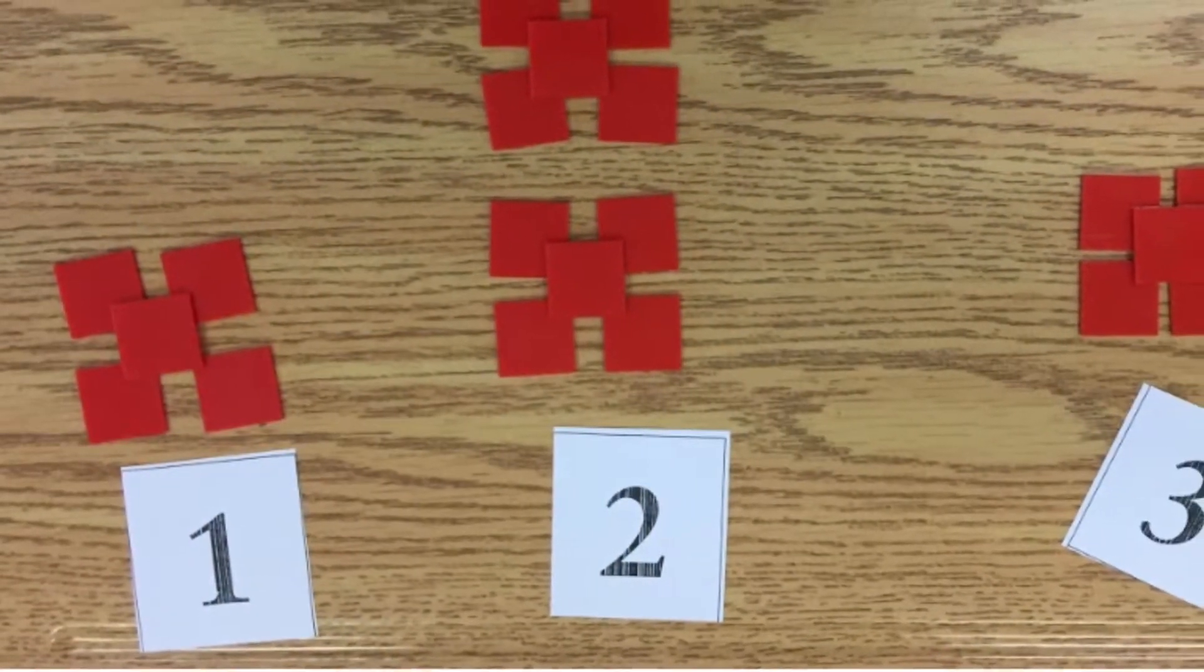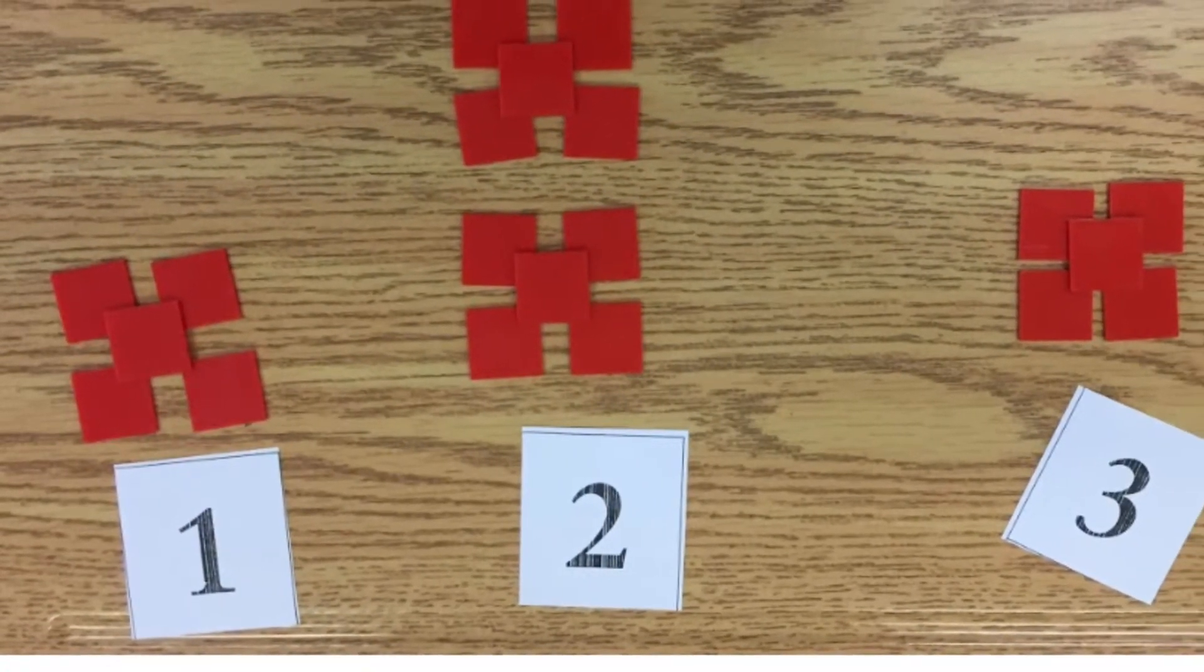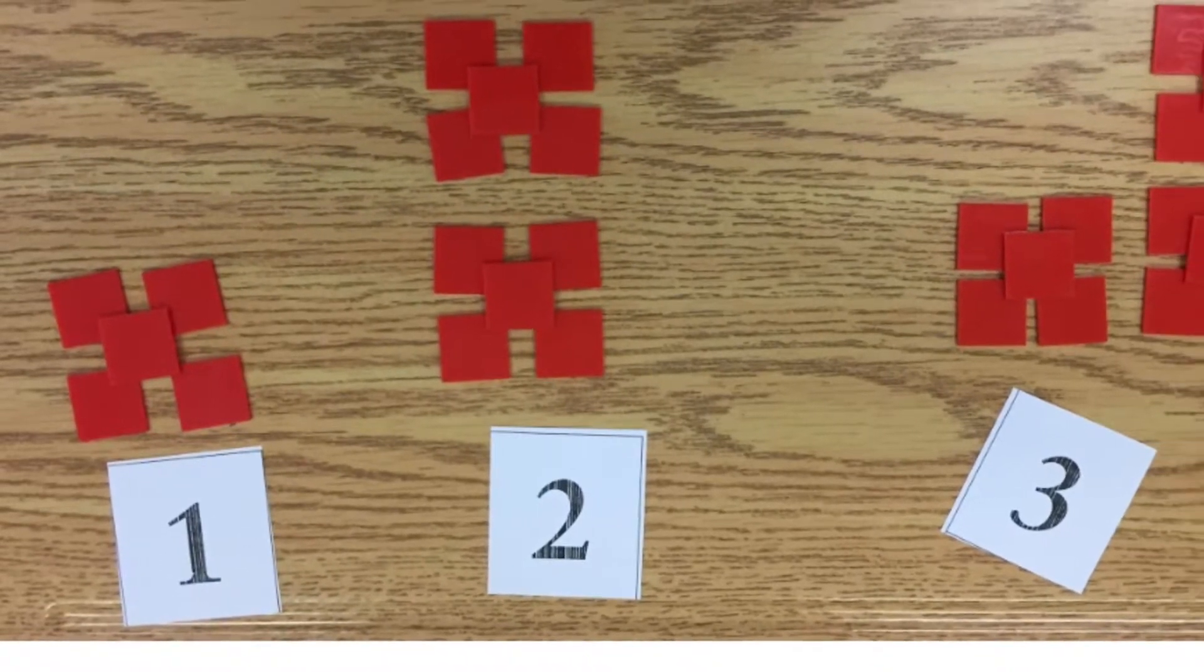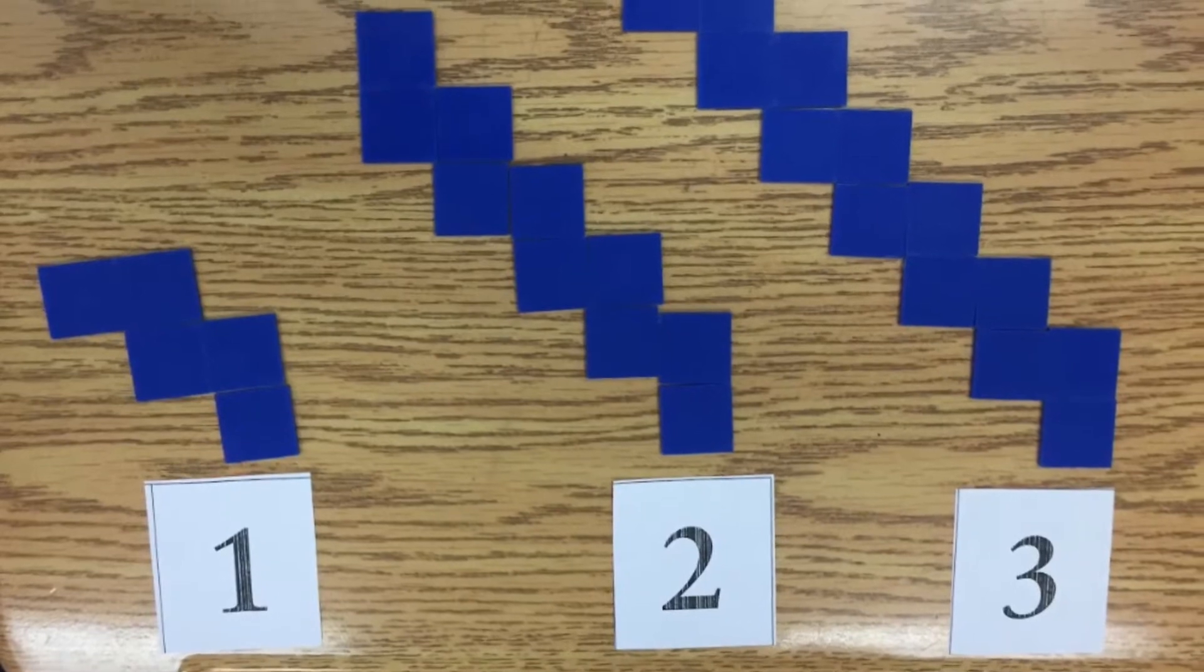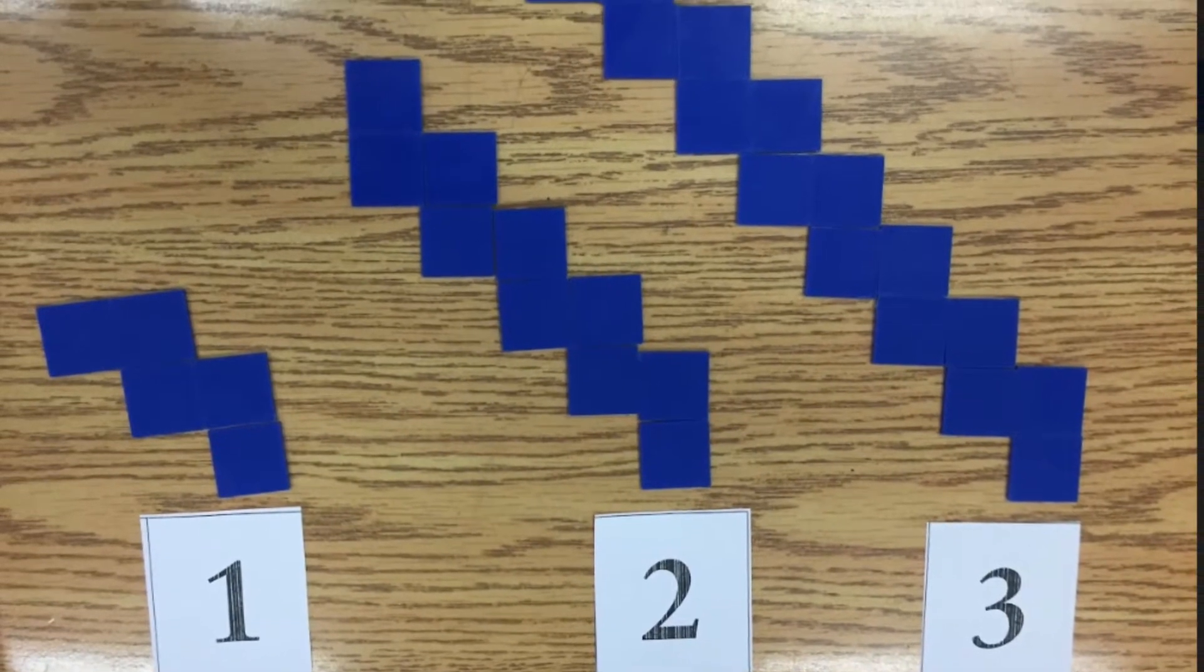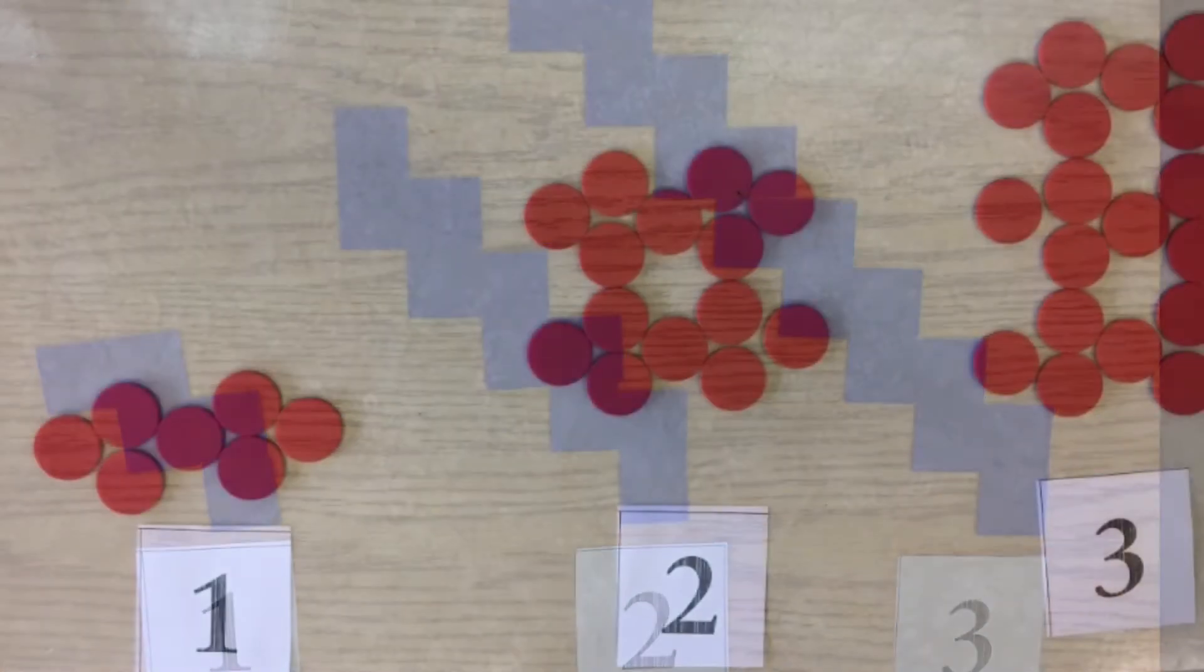This student chose the same growth, had a jumble of tiles at each position, correct number of tiles, but then put them into an interesting pattern to show her thinking a little more clearly. The student used yet another pattern to show position number times five.